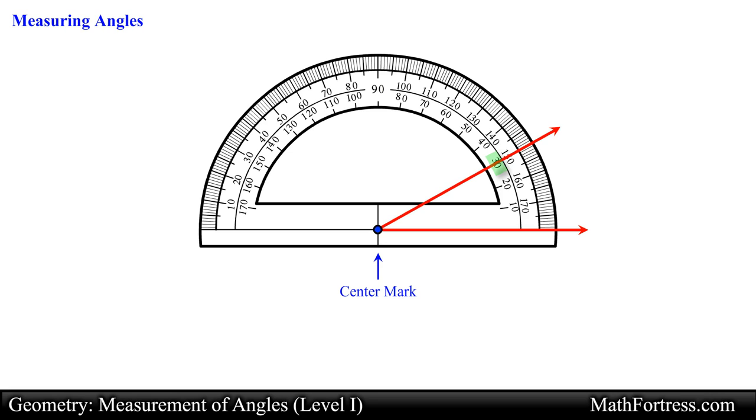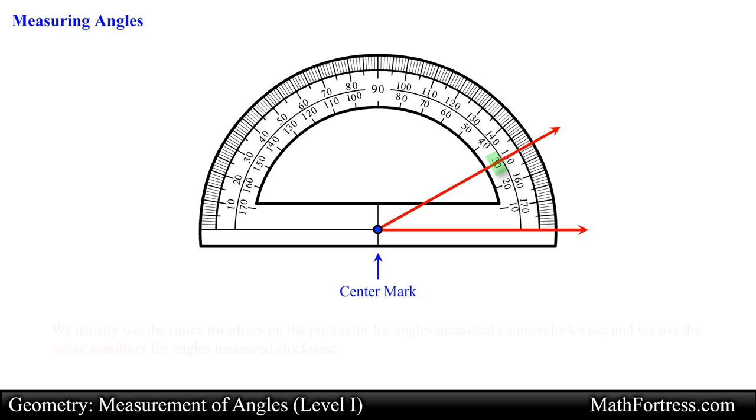Then the measure of the angle is given by the number that falls on the other ray or segment. We usually use the inner numbers on the protractor for angles measured counterclockwise and we use the outer numbers for angles measured clockwise.